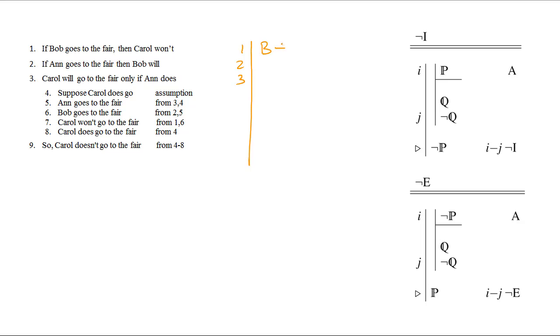We need 3 primary assumptions for the 3 premises. If Bob goes to the fair, then it's not the case that Carol goes to the fair. If Ann goes to the fair, then Bob will go to the fair. And Carol will go to the fair only if Ann does. The goal statement here, of course, is it's not the case that Carol goes to the fair, or not C.